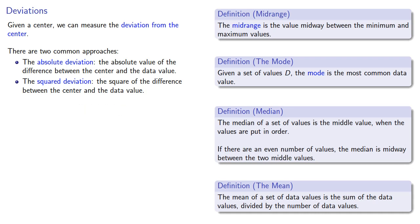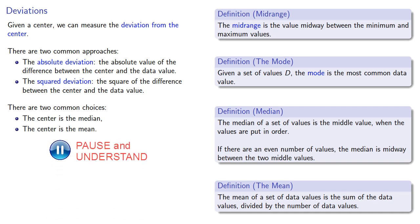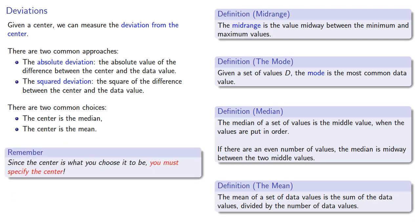While we have a choice of measures of center, there are two common choices: we can choose the center as the median, or we can choose the center as the mean. It's vitally important to keep in mind that since the center is what you choose it to be, you must specify the center — which measure of center you're going to use.